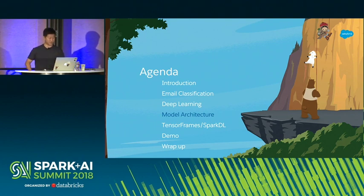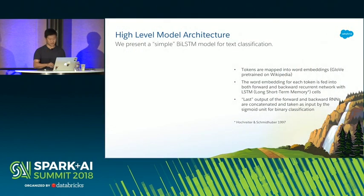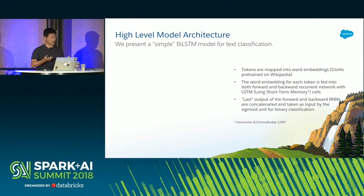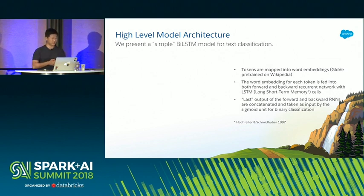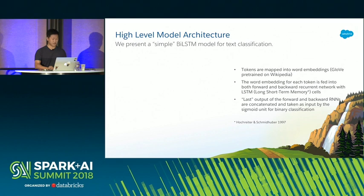My name is Wenhao, I work with Alexis who just spoke. So, model architecture. The whole introduction is to give you a flavor of the kind of things we will be talking about. Many of you may already be familiar with basic recurrent neural networks or LSTMs, so I'm going to describe a pretty simple architecture that we use to do text classification. There are many design choices you can make when you create your own recurrent neural network, and I'm going to cover a few basic, popular building blocks.